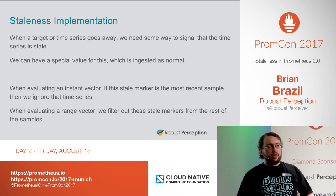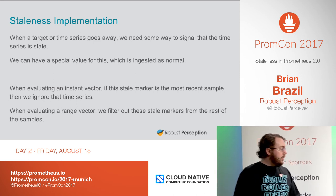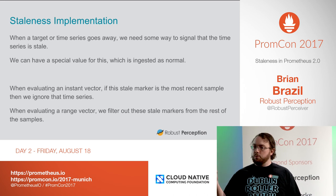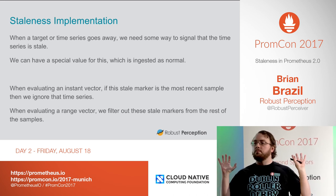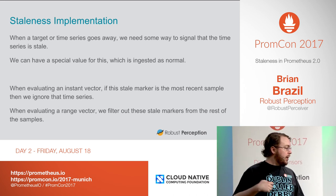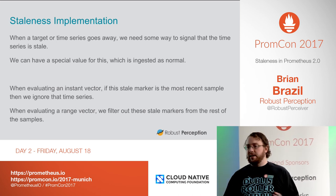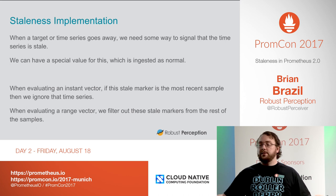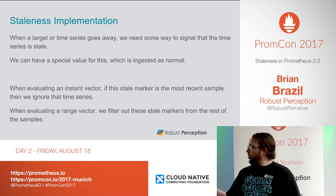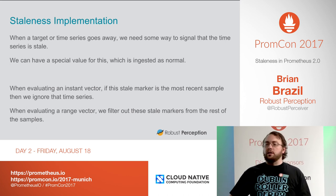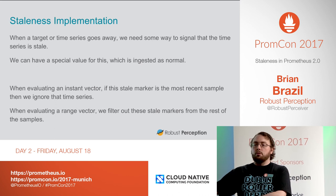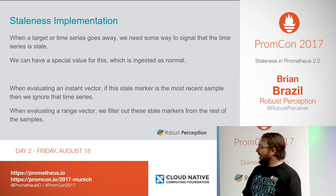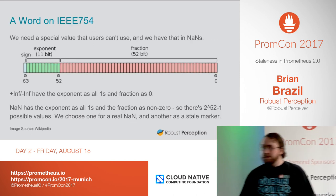The implementation seems simple in principle. When the target or time series goes away, we ingest a special marker value saying it's stale. When evaluating an instant vector, if we see that's the most recent value, we discard that time series because it's stale. For range vectors, we just ignore those values, filter them out, and pass them on to rate as usual. Nice, simple, elegant, right? There's a reason this is an hour-long talk.